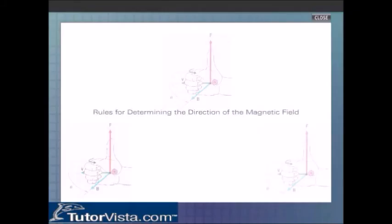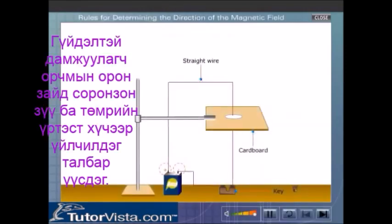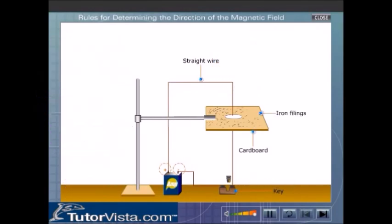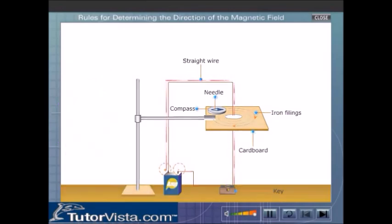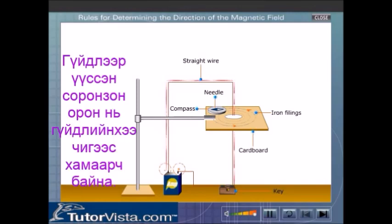Rules for Determining the Direction of the Magnetic Field. Observe the direction of the compass needle when the current is passing through a straight wire carrying current. Now, observe the direction of the compass needle when the current is reversed. The deflection of the needle is reversed in these cases.